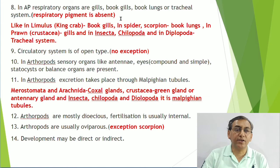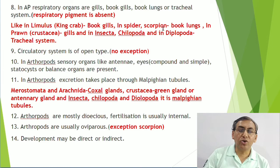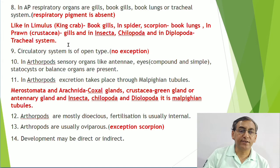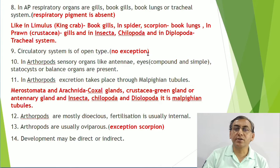The circulatory system in all arthropods without exception is open type. Sensory organs in arthropods include antennae, compound eyes (like in cockroach), simple eyes (ocelli), and statocysts which are balancing organs. Excretion takes place through Malpighian tubules in insects, but different arthropods have different excretory structures.